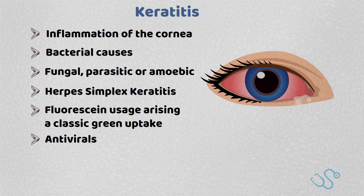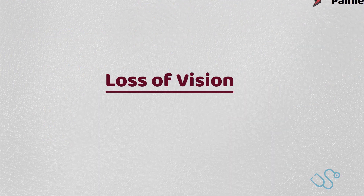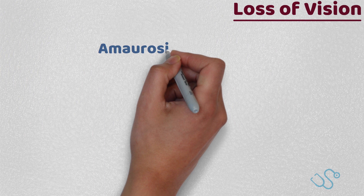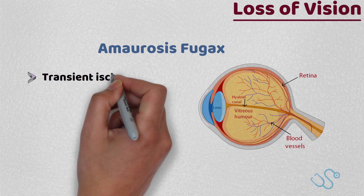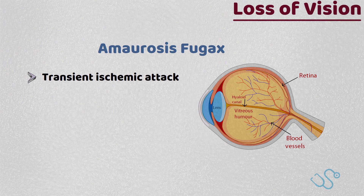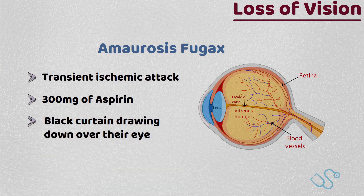Now that we've covered the red eye, what about going through the differentials when a patient has sudden loss of vision? Let's start with amaurosis fugax, which is often considered a transient ischemic attack where there is a transient loss of blood supply to the ocular arteries, and should be treated with 300mg of aspirin with urgent eye assessment. Most patients describe it as a black curtain drawing down over their eye.